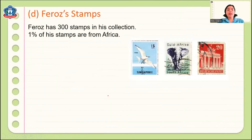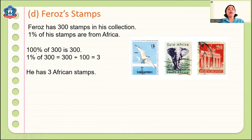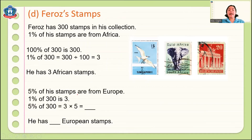Here is another problem: Pharaoh's Stamps. Pharaoh has 300 stamps in his collection. One percent of his stamps are from Africa. To find 1% of 300, we divide 300 by 100, which equals 3. Therefore, 1% of 300 is 3, so he has 3 African stamps. Five percent of his stamps are from Europe. Since 1% of 300 is 3, we multiply 3 by 5 to get 15. Therefore he has 15 European stamps.